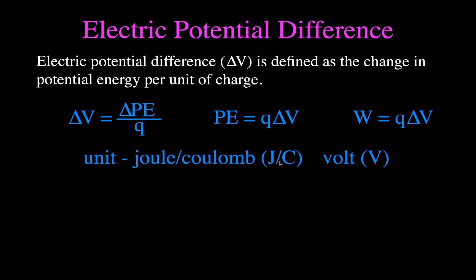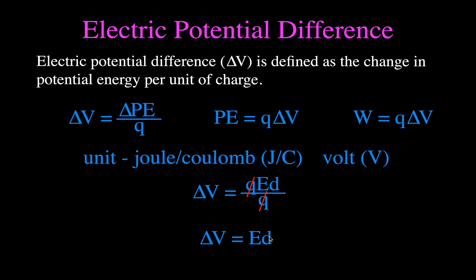If you have a 9-volt battery, that means the battery can supply 9 joules of potential energy to each coulomb of charge. We can also simplify the potential difference equation: since ΔV = ΔPE / q and ΔPE = qEd, dividing by q gives ΔV = Ed. This equation — the change in voltage equals the electric field strength times the distance — can only be used for uniform electric fields, which we find between parallel plates. It cannot be used for point charges.